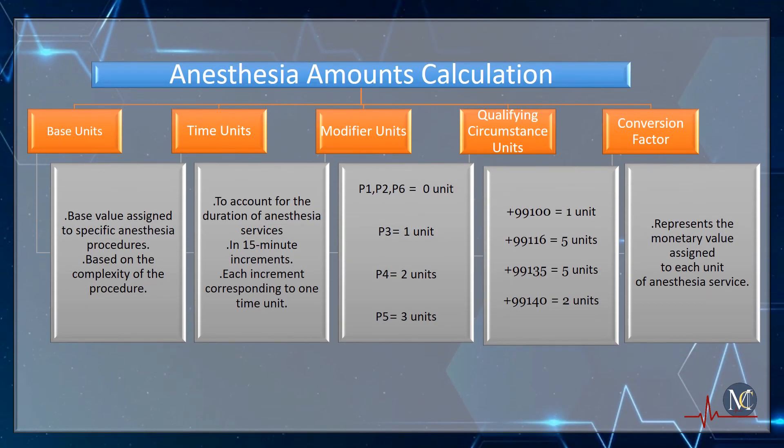Anesthesia billing involves the allocation of different units to calculate the amount. The first unit is the base unit. Base units represent the base value assigned to a specific anesthesia procedure, determined based on the complexity of the procedure. Each anesthesia procedure is assigned a certain number of base units, which serve as the foundation for calculating the anesthesia fee.